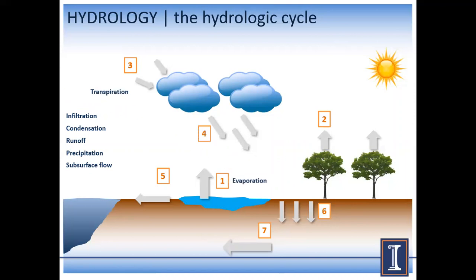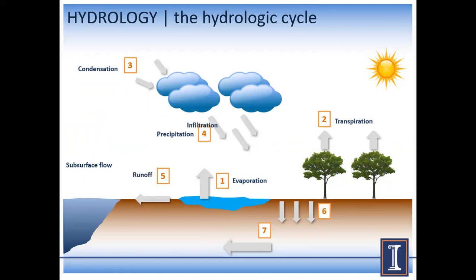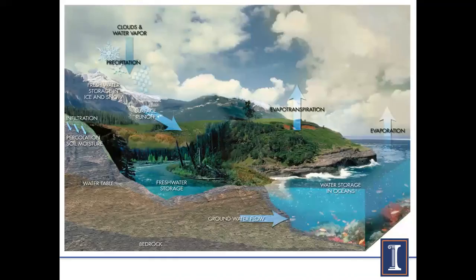This kind of shows which one goes where if you want to follow along with the PowerPoint. So first is evaporation, second is transpiration, then condensation, precipitation, runoff, infiltration - which is again what we'll be looking at, number six - and then subsurface flow. This is a good animation of how the hydrologic cycle works. And then this is a real-world example with real-life images labeled with the water cycle. Again, we're looking at infiltration, soil moisture, and groundwater flow.